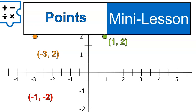Now let's plot the point negative 1, negative 2. We can line it up with negative 1 on the x-axis and negative 2 on our y-axis to put us at this point right here. We're also going to plot a fourth point, the point 4, negative 1. Where do you think it would be? We go 4 along the x-axis and then negative 1 on the y-axis — that's where that point would be.